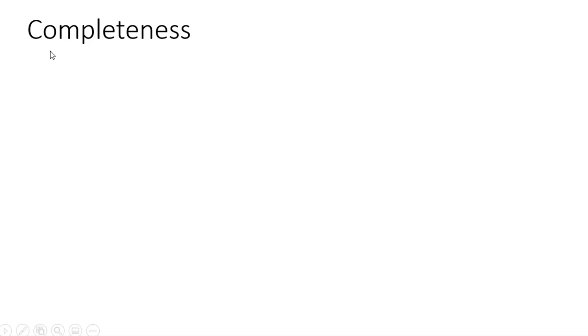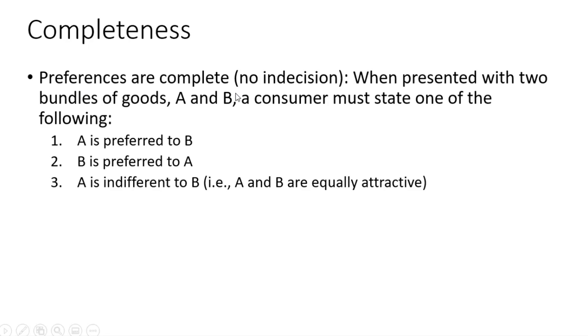Now let's begin with our axioms of consumer preference. The first axiom is completeness. Preferences are complete. When presented with two bundles of goods, A and B, a consumer must state one of the following: Bundle A is preferred to bundle B, Bundle B is preferred to bundle A, or A is indifferent to bundle B—that is, A and B are equally attractive. This axiom states that a consumer can compare bundles and rank them.